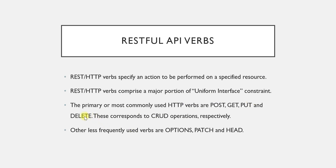Now let's see the primary and most commonly used HTTP verbs in RESTful API. The four main verbs are POST, GET, PUT, and DELETE. These correspond to CRUD operations respectively: POST represents Create, GET represents Read, PUT represents Update, and DELETE represents Delete. In most application programming scenarios, the majority of work involves CRUD operations, which is why these four verbs are considered the primary verbs in RESTful API.